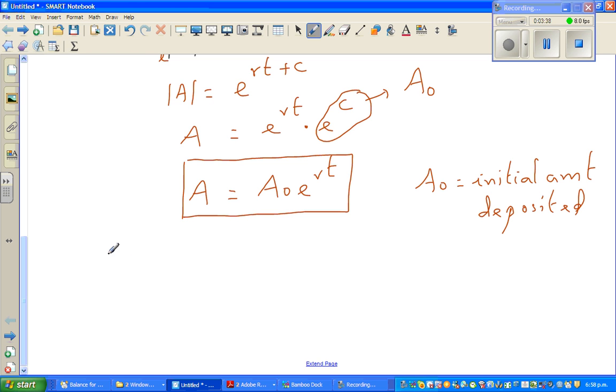Okay, so in this particular case our A_0 is 1250, your rate of interest r is 0.0509.